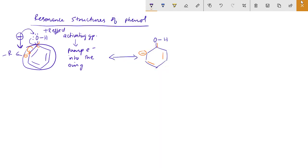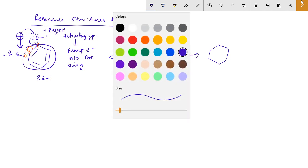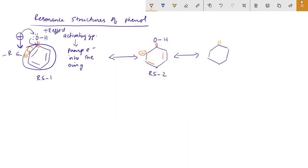Next, there is a resonance structure. We will give numbers. This is resonance structure 1. This is resonance structure 2. When you look at resonance structure 2, this bond will shift to this carbon. This carbon will get a negative charge here.